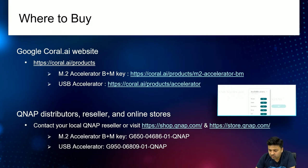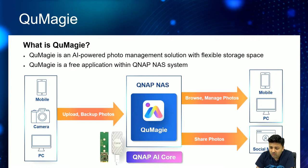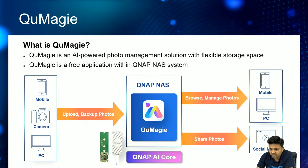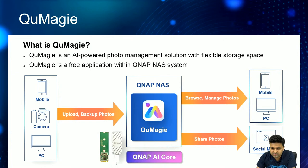We've also mentioned the part numbers for anyone looking to purchase. Now, what is the whole purpose of Google TPU here? QNAP has one of the most important photo management applications called QMaji, which is an AI-powered photo management solution. The AI part of QMaji — and in fact the AI part of any application — is always going to be resource-consuming.